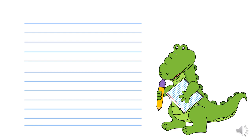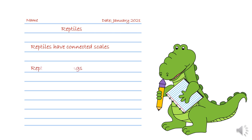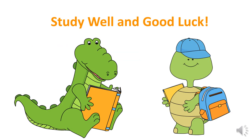I want you to write down in your copy books what we learned today. Write your name and the date. The title of our lesson is Reptiles. We learned: reptiles have connected scales, reptiles have lungs, and some reptiles have legs. This is our lesson for today — I hope you enjoyed it. Study well and good luck. Goodbye everyone!